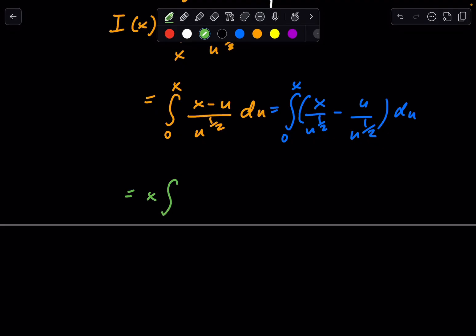Continuing on, we can say this is x. We can just pull out the x, because this is not really the variable we're integrating with respect to, because it's u in this case. Just because it's in the bounds doesn't mean we can't pull it out. So, we have the x times the integral from 0 to x of u to the negative 1/2, because it's in the denominator, du. And I'm going to separate these two integrals, and then minus the integral from 0 to x of u to the 1/2 du.